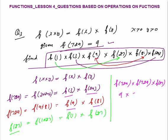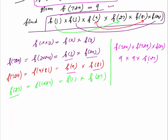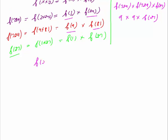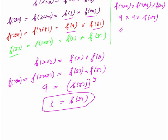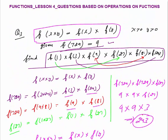To find f(27), use the basic equation with x = y = 27: f(27·27) = f(27)·f(27), so f(729) = f(27)², which means 9 = f(27)², so f(27) = 3. Therefore the final answer is 9 × 9 × 3 = 243. These kinds of questions are very important because pure logic and common sense are applied. That was all about Lesson 4 — questions based on operations on functions. Thank you.